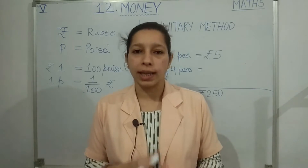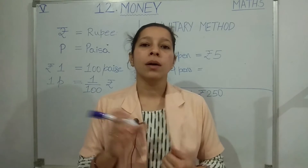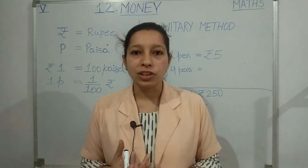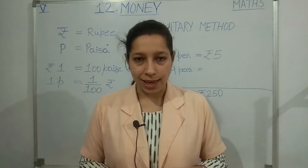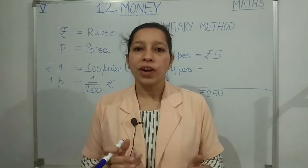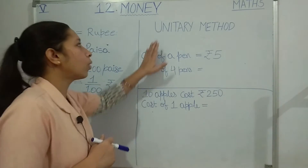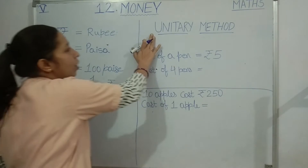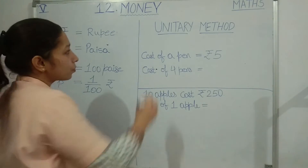Now in fifth standard, what is new that you are going to study in this chapter? In fifth standard, under the money chapter, you will be working with transactions. When you buy or purchase something, that is known as a transaction. We will be studying about profit and loss, but the main thing we are going to cover today is the unitary method.